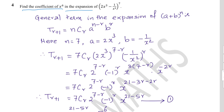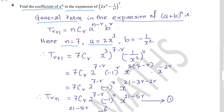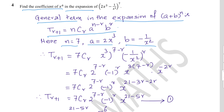Example 4: Find the coefficient of x^6 in the expansion of (2x³ − 1/x²)^7. Using the general term: T(r+1) = nCr · a^(n−r) · b^r, where n = 7, a = 2x³, b = −1/x². Substituting: T(r+1) = 7Cr · (2x³)^(7−r) · (−1/x²)^r.